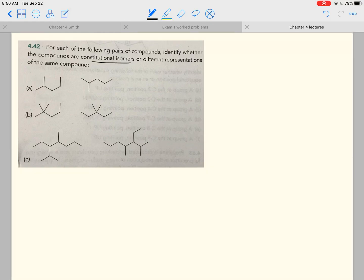Problem 42 is asking us to decide whether we have constitutional isomers or different representations of the same compound. So we want to know if these are the same or different, basically. Now a good way to do that is just to name the compounds.